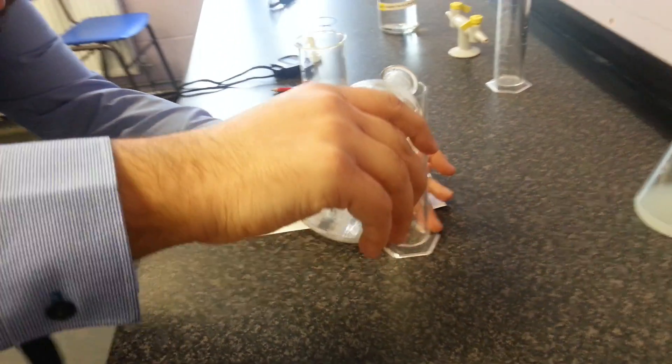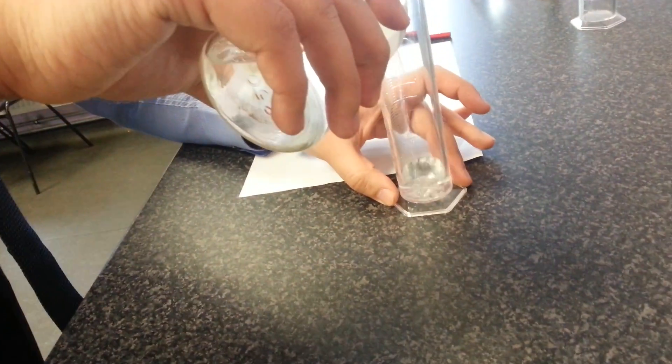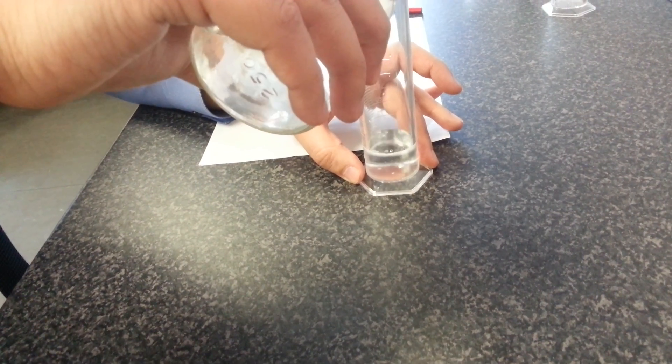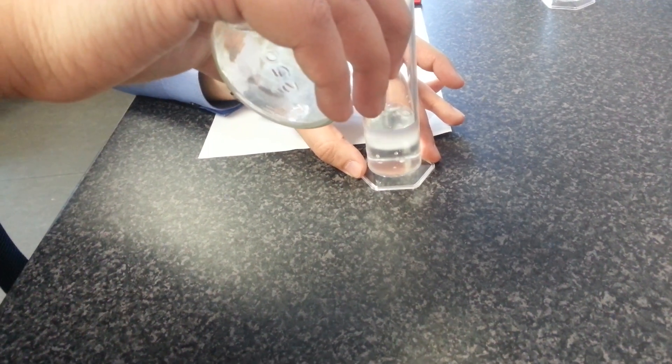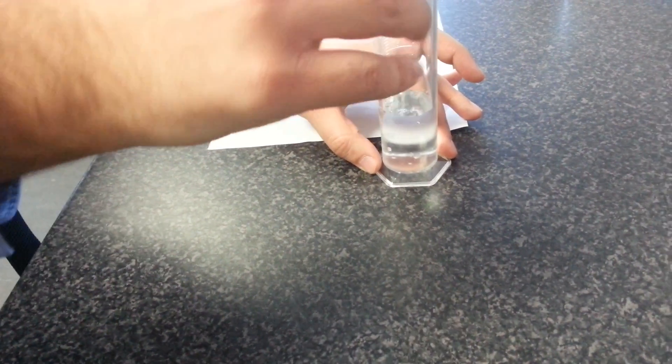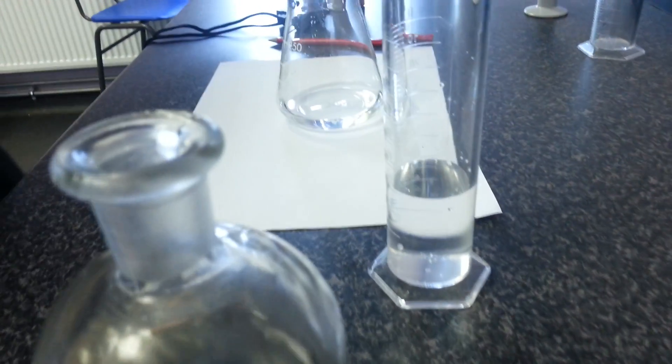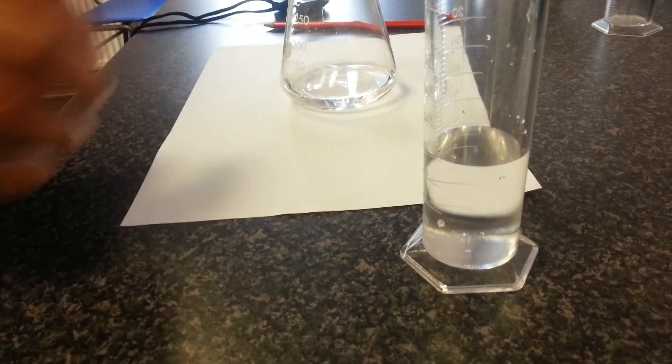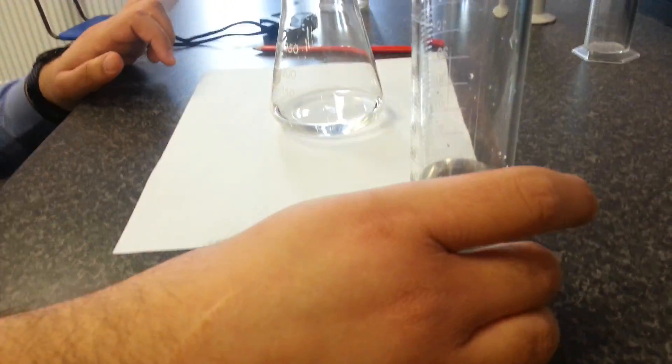You're going to pour out the hydrochloric acid like we did with the thiosulfate into the measuring cylinder and measure out 40 millilitres again. So both times it's going to be 40 millilitres. You're going to read it, make sure it's hit the 40, yep that's exactly 40.